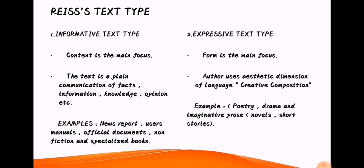Text type number one: informative text type. The content is the main focus. The text is a plain communication of facts, information, knowledge, opinion, and so on. Examples of informative text type include news reports, user's manuals, official documents, non-fiction, and specialized books.